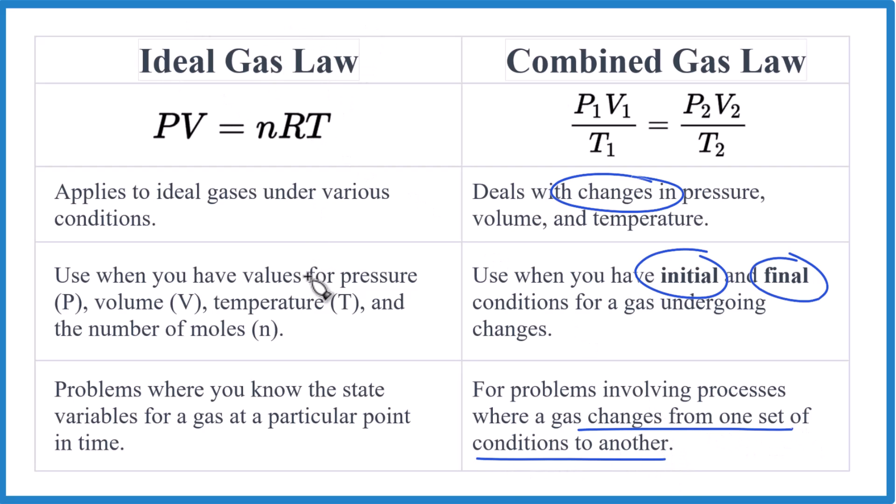So for the ideal gas law, you're only going to have one set of conditions, and you're probably going to have moles involved, although you could have moles in this equation here, although usually we don't see that very often. So if you have moles, look and see if you only have one set of conditions, because we're talking about a particular point in time. So let's look at some problems and see if we can identify what law we should use.